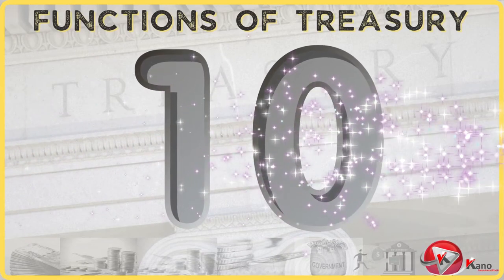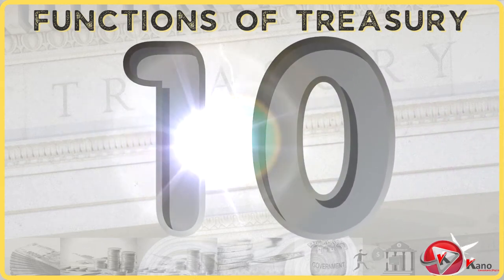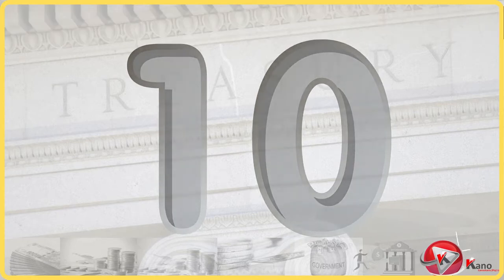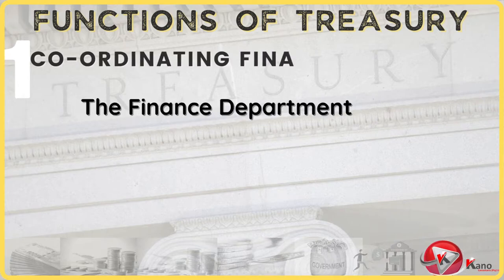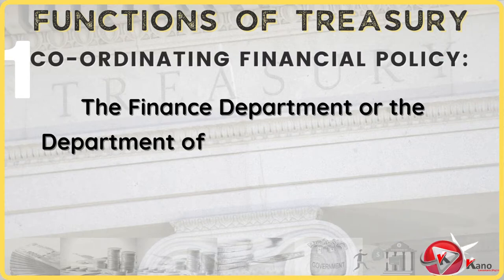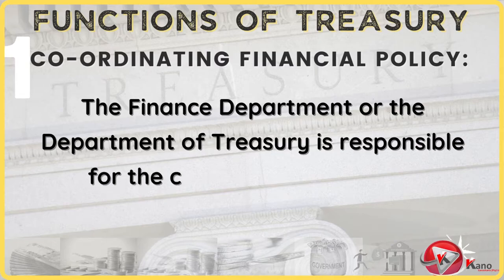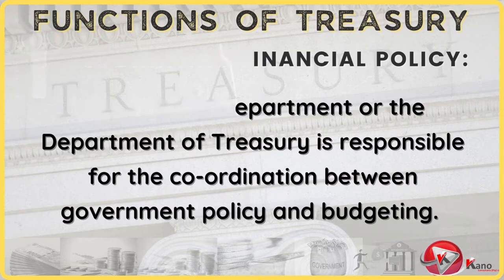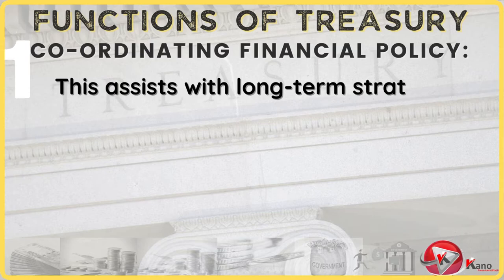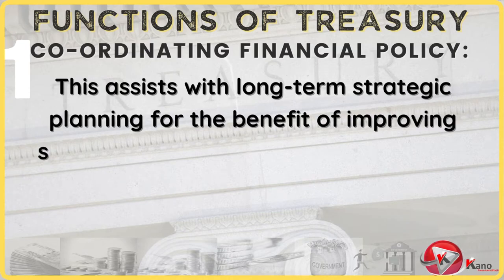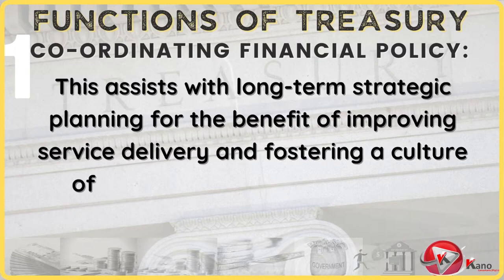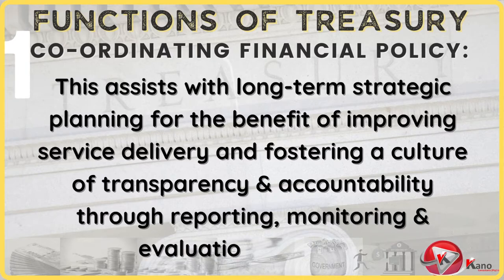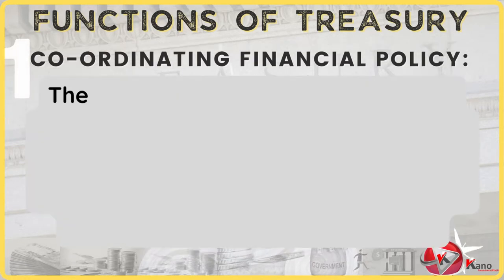Here is a list of the ten functions that are normally performed by the government's Finance Department or the Treasury Department. Function 1: A government's Finance Department, or the Department of Treasury, is responsible for the coordination between government policy and budgeting. This assists with long-term strategic planning for the benefit of improving service delivery, and fostering a culture of transparency and accountability through reporting, monitoring, and evaluation strategy.